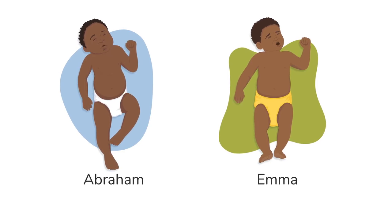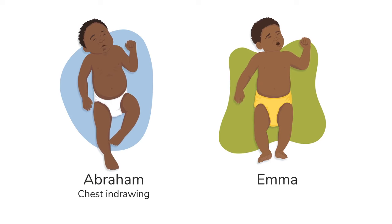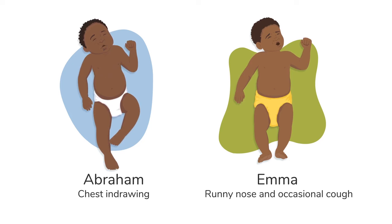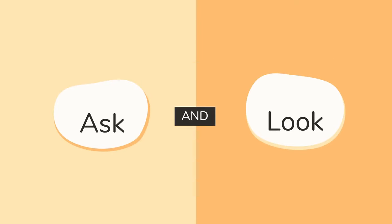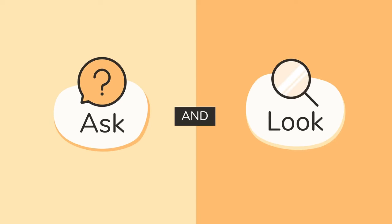Let's go back to Abraham and Emma. After doing a detailed assessment of each child, you've learned that Abraham has chest-in-drawing with his cough. Emma has a runny nose and an occasional cough. So now can you recognize which child is very ill and needs urgent care? Yes, it's Abraham as he shows a danger sign, so you will need to refer him for urgent care. For Emma, help her caregiver treat the common cold at home. Remember, before taking any action, ask questions about the child's symptoms and look at the signs they are showing. By following this process, you could save a life.